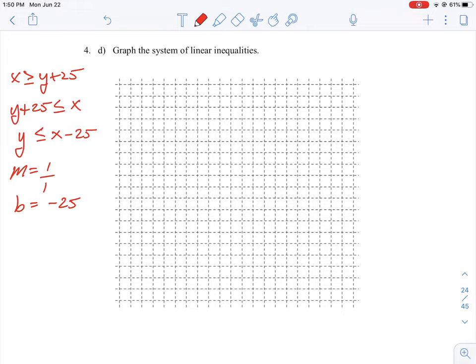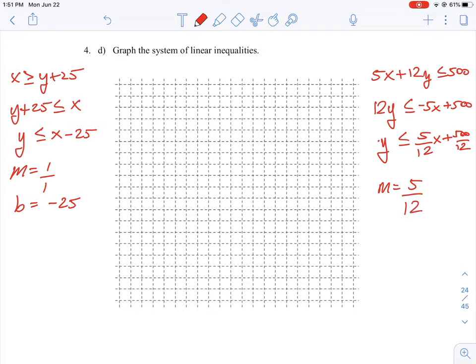If we look at our other equation, we would have 5x plus 12y is less than or equal to 500. So we can move the x over to the other side. So it'll be negative 5x plus 500. And then we can divide by 12. So it will be y is less than or equal to negative 5 over 12x plus 500 over 12. This is going to be a little bit more difficult to plot because the numbers are bigger. This is a bit of an awkward slope to work with.